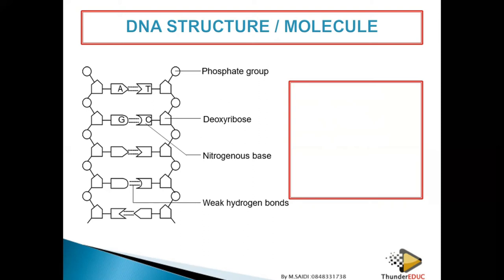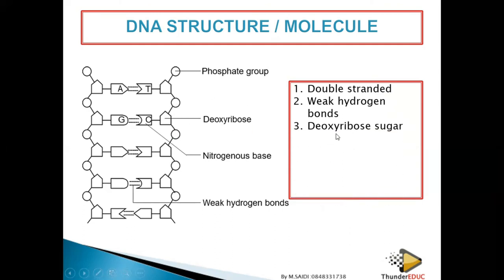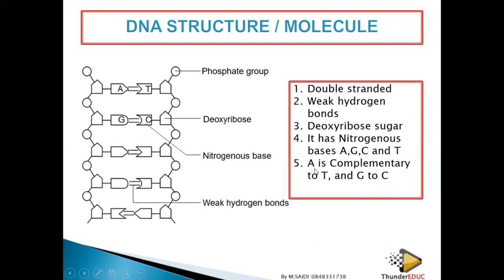We will see more questions when we wrap up this topic. DNA is a double-stranded molecule with weak hydrogen bonds. It contains deoxyribose sugar, nitrogenous bases that are complementary to each other — adenine with thymine, guanine with cytosine — and forms a double helix. If a question asks about the difference between DNA and RNA, DNA is double-stranded while RNA is single-stranded; DNA has weak hydrogen bonds while RNA does not.